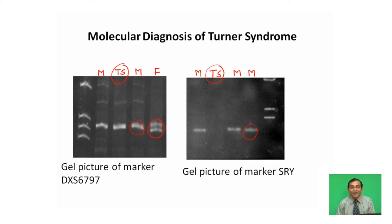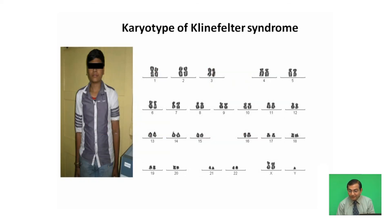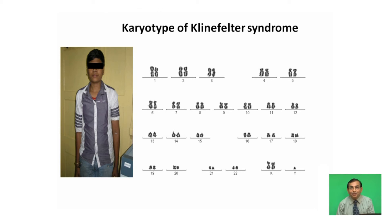In case of Klinefelter syndrome, which was discovered by HF Klinefelter in the year 1942, these patients are phenotypically male. They are generally tall, have small testes, enlarged breasts, and underdeveloped body hair. Their karyotype shows the presence of two X chromosomes and one Y chromosome — that is, XXY.